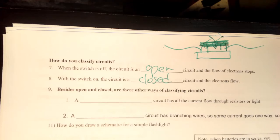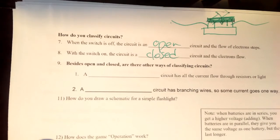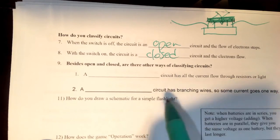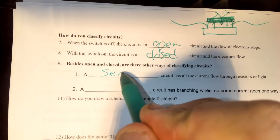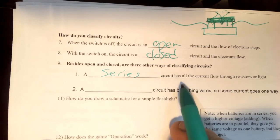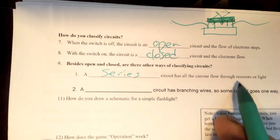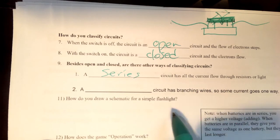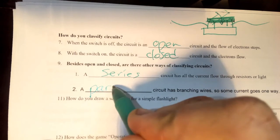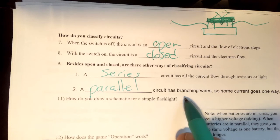Besides open and closed, are there other ways of classifying circuits? Yes indeed. As we have said before, a series circuit is when we have all the current flowing through each resistor or light. And then a parallel circuit is one with branching wires.